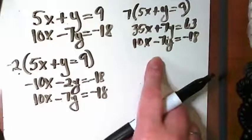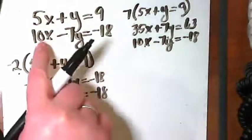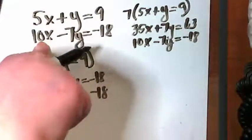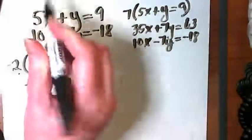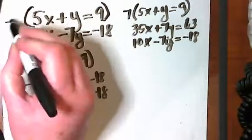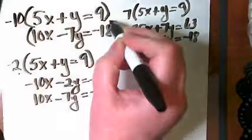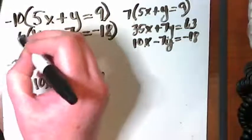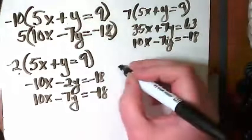There are some people who like to do this and change both equations. Like, what if we wanted to make the x term 50x and one was positive and one was negative? If I was going to do that, I would multiply this by negative 10. And I would multiply this by 5. And let's see what it would end up looking like.